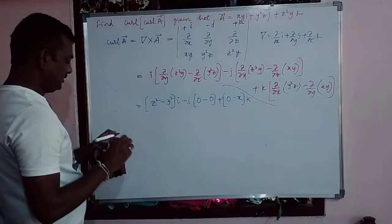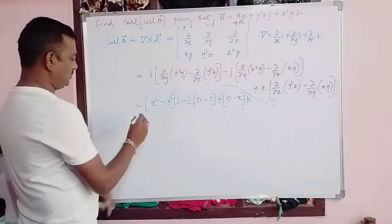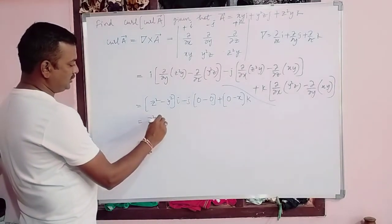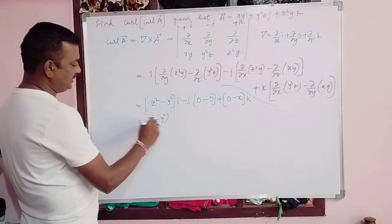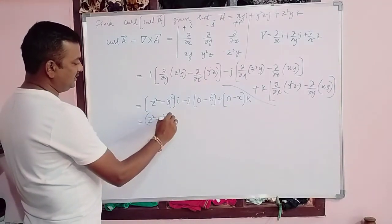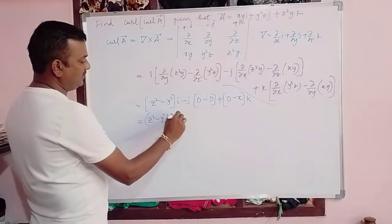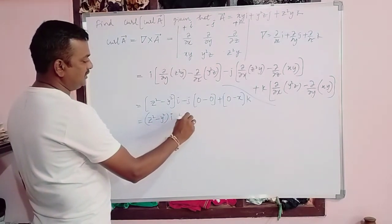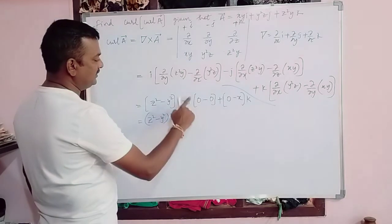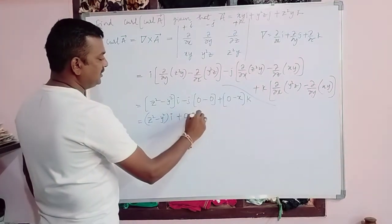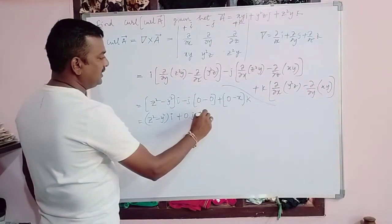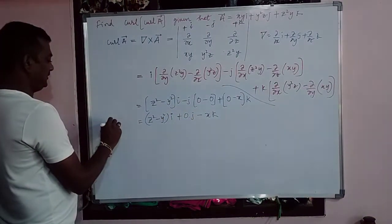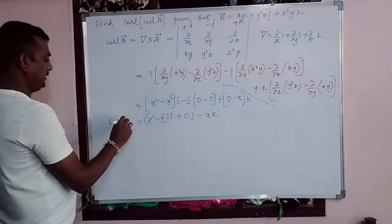So totally, curl A equals (z square minus y square) i minus 0 j minus x k. This is curl A.